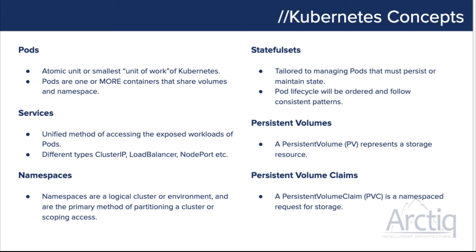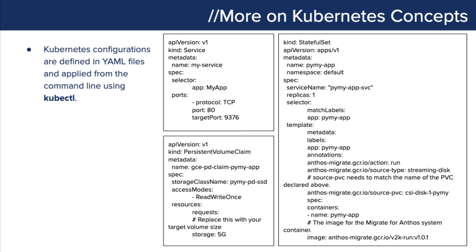Let's look at some YAML configuration examples we'll be using in this demo. In the top left corner, we're going to deploy a service listening on port 80 and directing traffic back to port 9376. There's also a small YAML configuration for a persistent volume claim — we're claiming 5 gigs of storage with a read-write-once configuration. And this is a stateful set example, which is a bit more complicated with more configuration variables. At the very bottom you can see the container image that it's set to run.